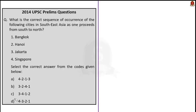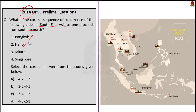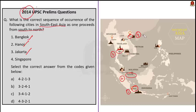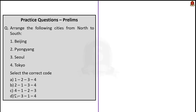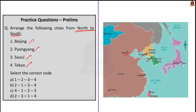Third question — a previous UPSC question from 2014: What is the correct sequence of the following cities in Southeast Asia from south to north? Bangkok, Hanoi, Jakarta, Singapore. From the map: Jakarta is at the bottom, then Singapore, then Bangkok, then Hanoi. The south to north sequence is Jakarta, Singapore, Bangkok, Hanoi. The correct answer is option C — three, four, one, two. Fourth question: Arrange Beijing, Pyongyang, Seoul, and Tokyo from north to south. From the map, the north to south arrangement is Beijing, Pyongyang, Seoul, Tokyo. The correct answer is option A — one, two, three, four.